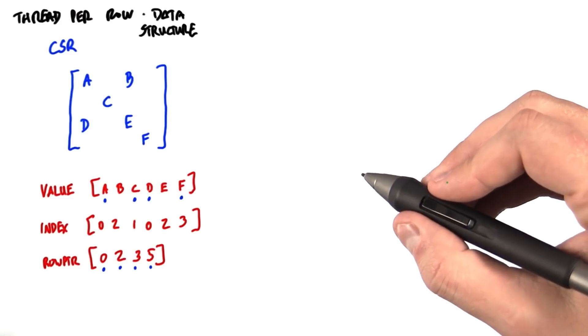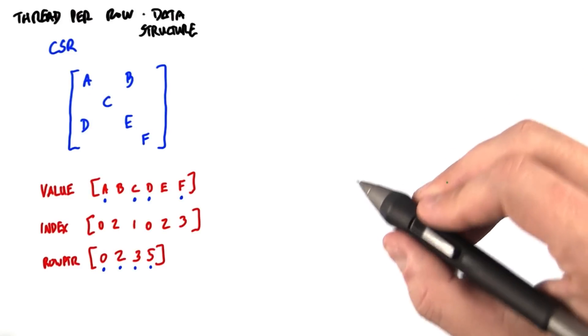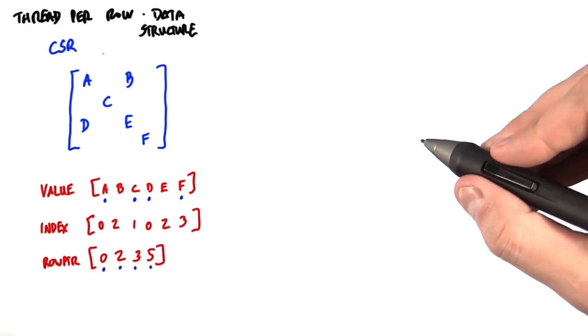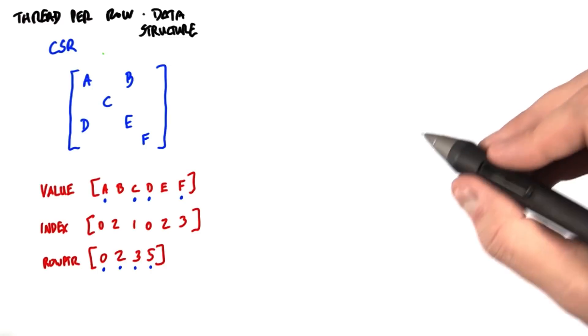We'll start with the thread per row approach. Let's start with the data structure. We're going to use the CSR, the compressed sparse row format here, just as we did in unit 4.